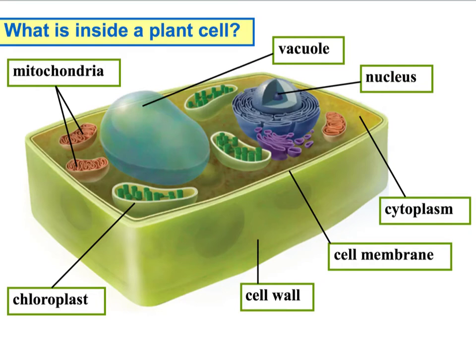The plant cell has a box shape, and you'll notice it has an extra layer beyond the cell membrane on the outside — that's called the cell wall. The cell wall is a stiff structure outside the cell membrane that gives the plant extra support, because plants need more support.